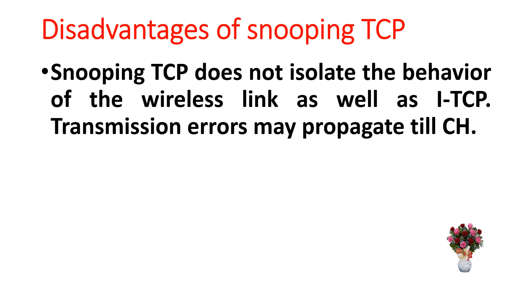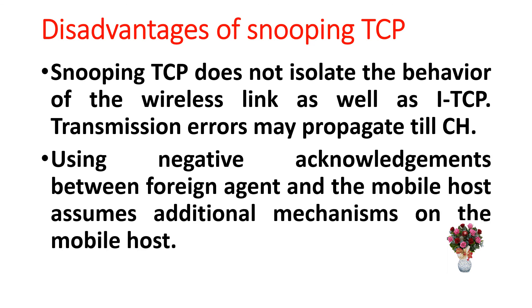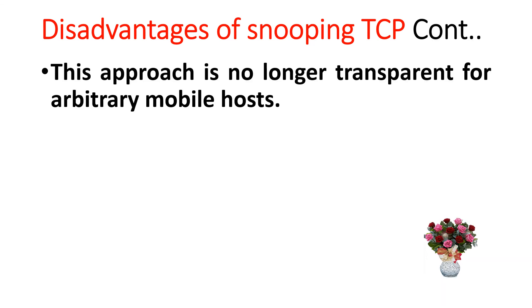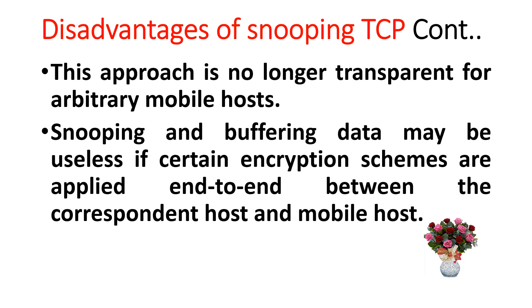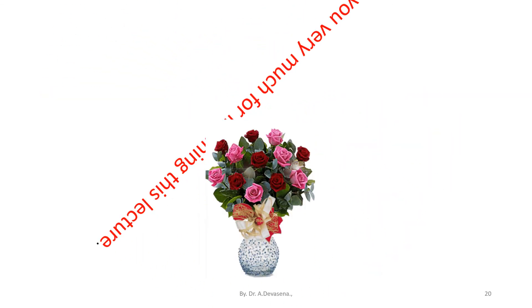Snooping TCP does not isolate the behavior of the wireless link as well as ITCP — indirect TCP — does. Transmission errors may propagate to the correspondent host. Using negative acknowledgements between the foreign agent and mobile host assumes additional mechanisms on the mobile host. This approach is no longer transparent for arbitrary mobile hosts. Snooping and buffering data may be useless if certain encryption schemes are applied end-to-end between the correspondent host and mobile host.